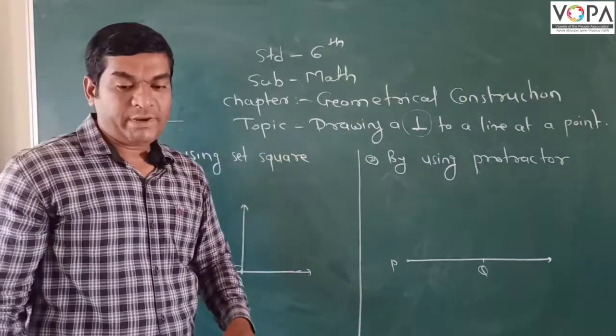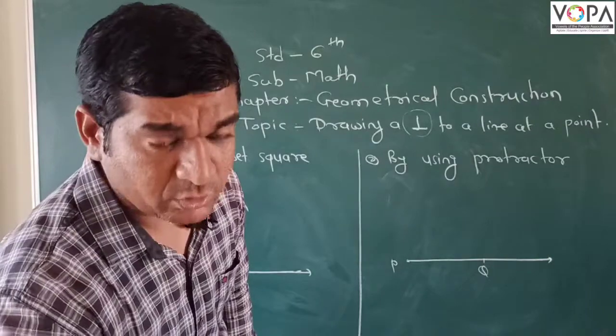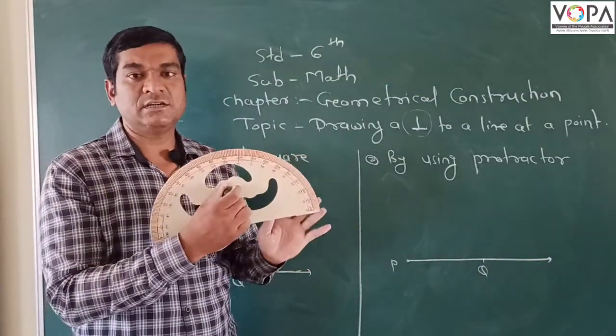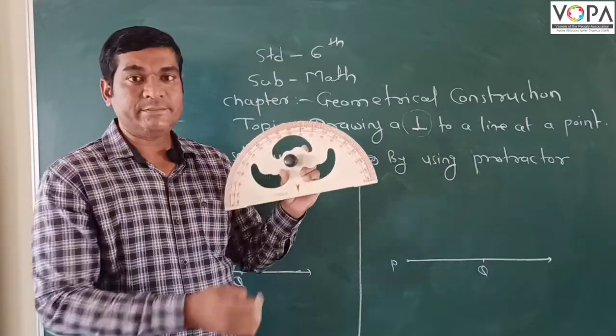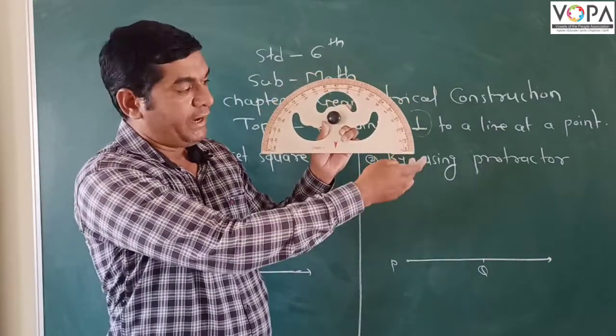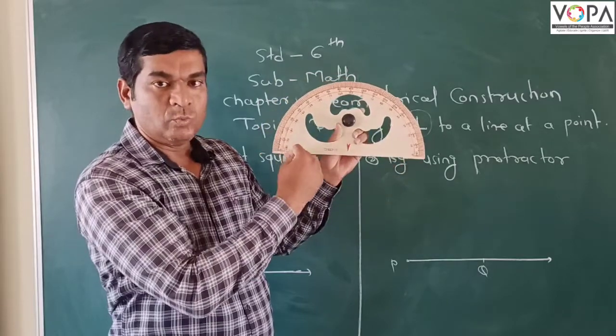Then the next topic, by using protractor. This mathematical instrument is called a protractor. And in this mathematical instrument, we have markings from 0 to 180 degrees and from that side 0 to 180 degrees.